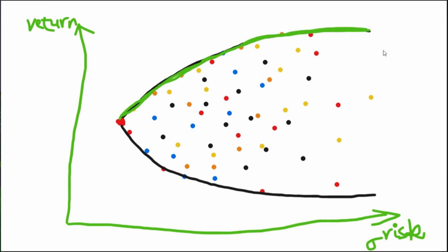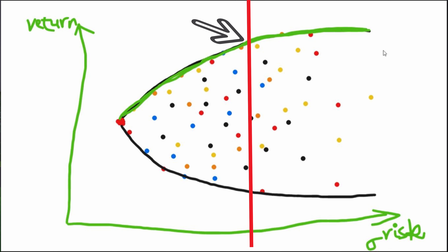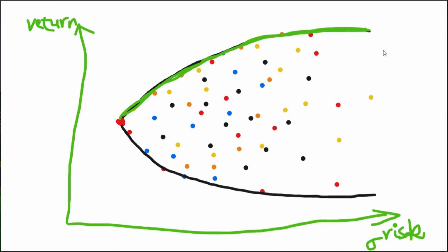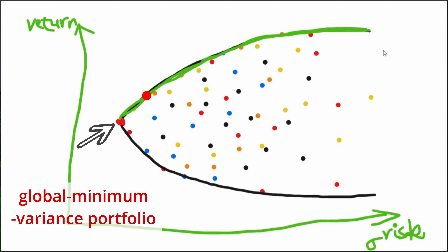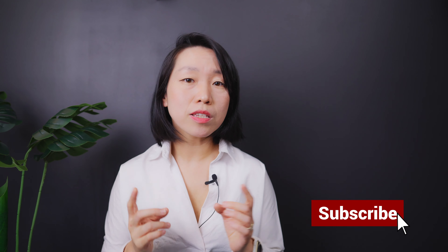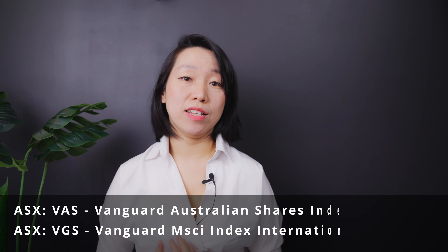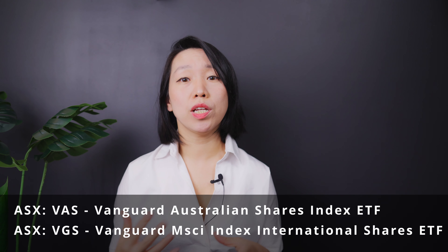Portfolios on Markowitz's efficient frontier provide higher return with the same level of risk. So along the efficient frontier, if you're more conservative, you may be happy with an allocation at the global minimum variance point. As it travels to the northeast, the portfolio becomes more aggressive — providing higher return with higher risk. Now, keeping this in mind, let's look at a real example portfolio consisting of two assets: VAS and VGS. Many Aussie investors hold VAS and VGS as their core portfolio, so let's use these two ETFs and see what would be the optimal asset allocation.